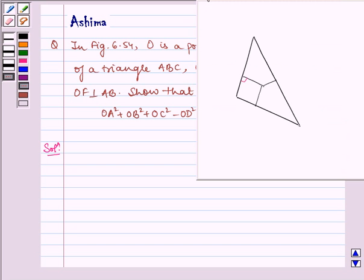Now let us see the figure. Here we have figure 6.54, in which O is in the interior of triangle ABC, OD is perpendicular to BC, and OF is perpendicular to AB.